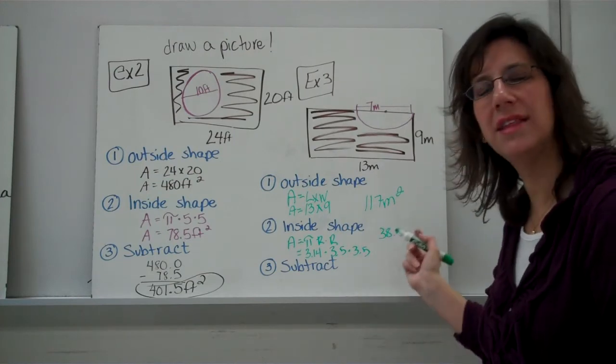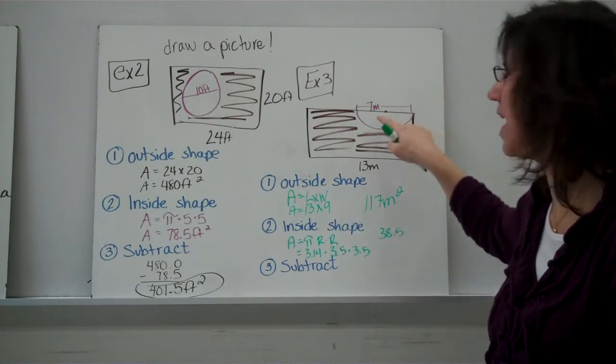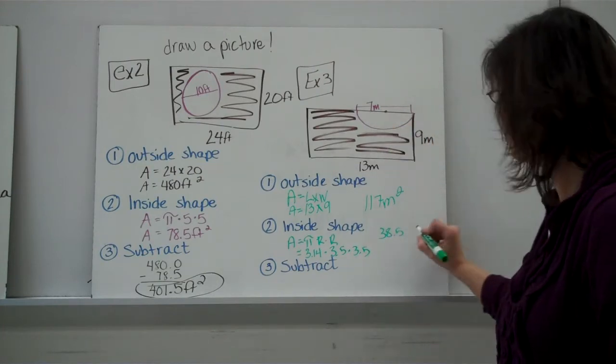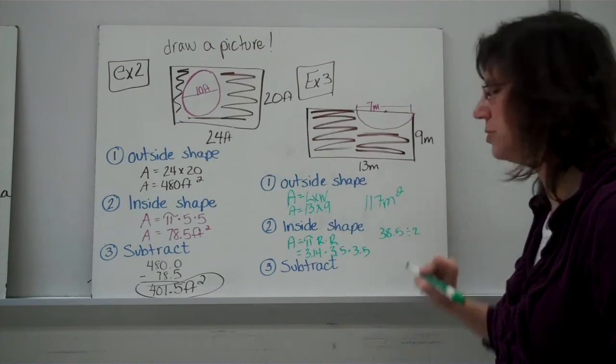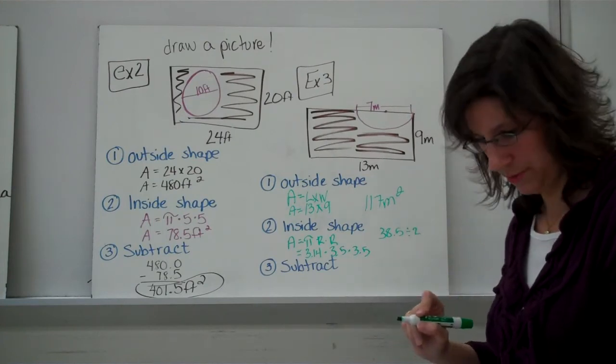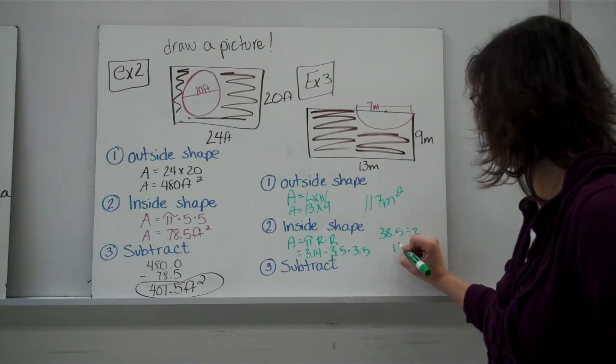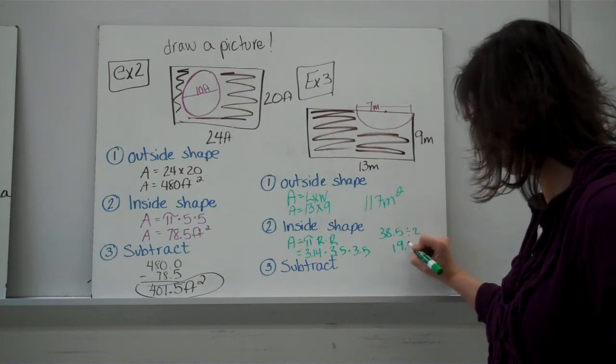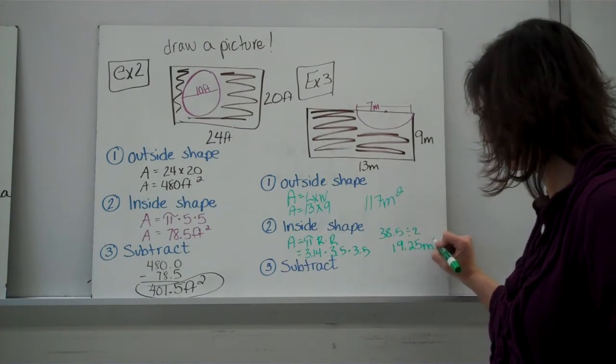Now, remember, that's the area of an entire circle, but we don't have an entire circle. We only have a half a circle. So, you do have to divide that number by 2. Half of a circle. So, you should have gotten, for the circle part, 19.25 meters squared.